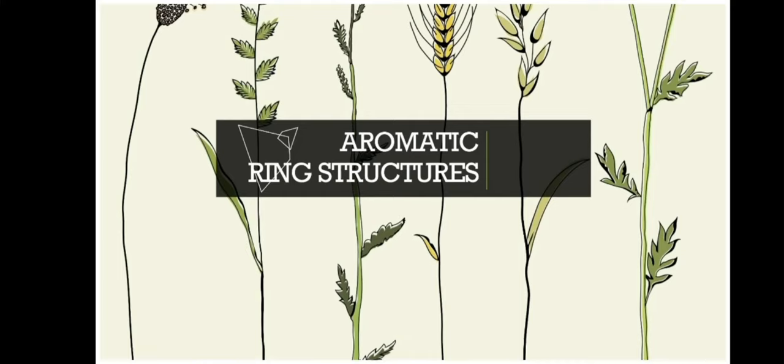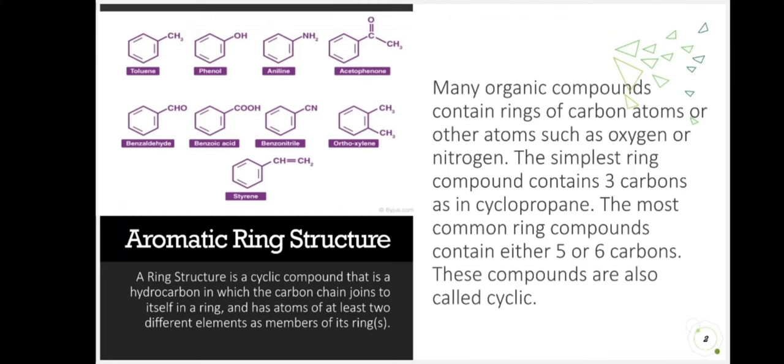Let's continue where we left off last meeting, the aromatic ring structures. Many organic compounds contain rings of carbon atoms or other atoms such as oxygen or nitrogen. The simplest ring compound contains three carbons as in cyclopropane. The most common ring compounds contain either five or six carbons. These compounds are also called cyclic.